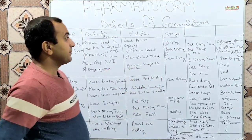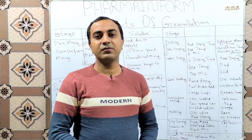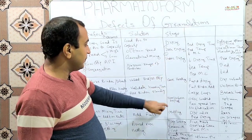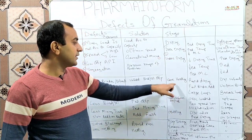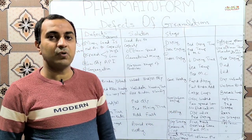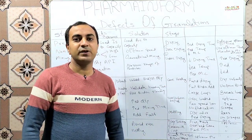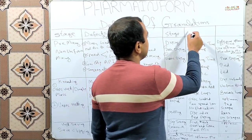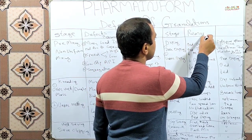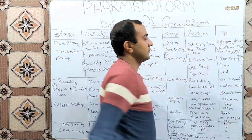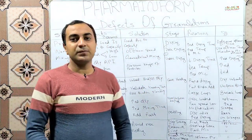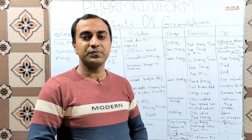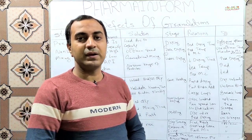The next step is drying. In wet granulation, drying is a very important step. In drying, we may face the following defects: over-drying, under-drying, case hardening, non-uniform drying, and migration. We will discuss each defect one by one, finding out the reasons and solutions. Over-drying, as the name indicates, is a defect in which our granules are dried more than the recommended amount or for more than the recommended time.